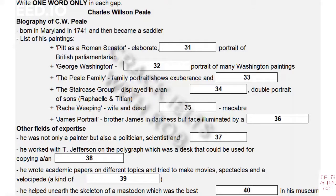He's also remembered for his work as a naturalist. He established the first scientific museum in America, and he even invented his own system of taxidermy — the art of preparing, stuffing, and presenting dead animals so that they appear lifelike. He was well ahead of his time in that he placed his animals in a simulated natural environment. His most magnificent exhibit, however, was the complete skeleton of an extinct mammal known as a mastodon, which he helped excavate. The event was memorialized in his extraordinary painting, 'The Exhuming of the Mastodon.'